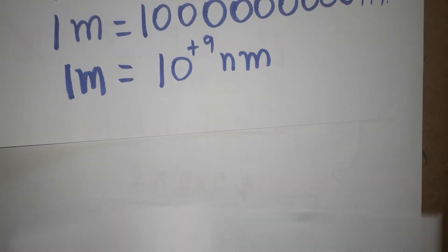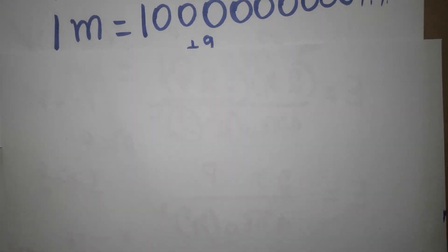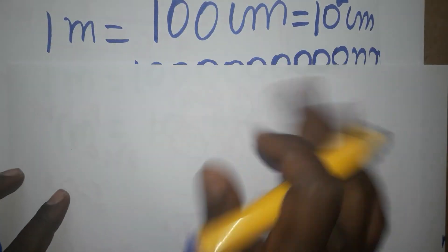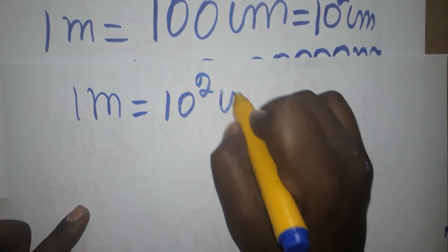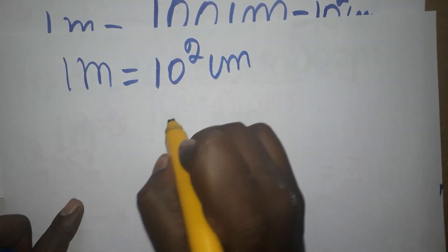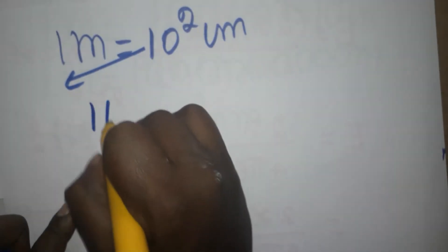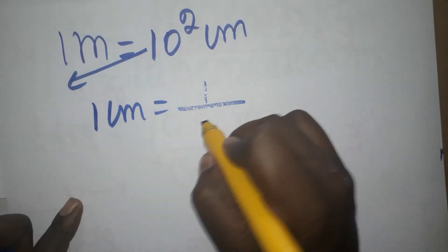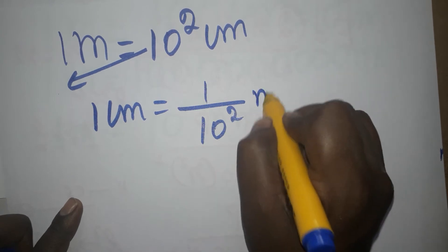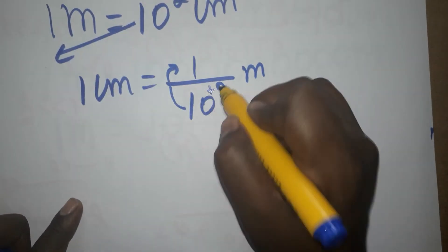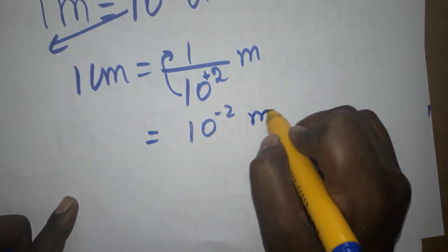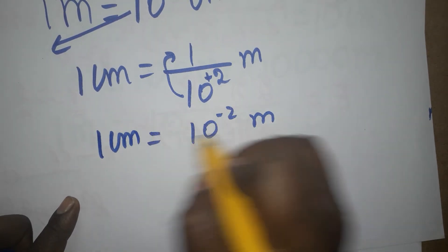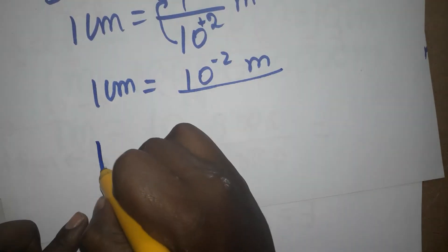If you know the meter relation, we can find: one centimeter is equal to how many meters? We know one meter is 10 power 2 centimeters, so one centimeter equals one divided by 10 power 2 meters. Bringing it from the denominator, plus 2 becomes minus 2, so one centimeter is equal to 10 power minus 2 meters.